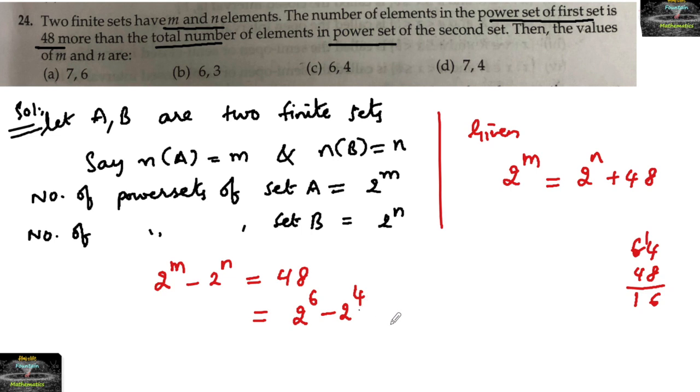This equals 2^6 - 2^4. So 2^6 is 64, and 64 minus 16 equals 48.